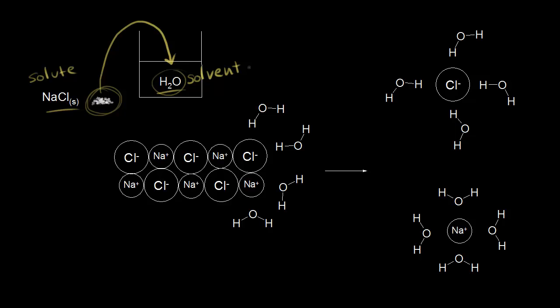If you look more closely at sodium chloride, solid sodium chloride is an ionic crystal, and so it's held together by ionic bonds. The sodium cation with a positive charge is attracted to the chloride anion with a negative charge, and that's what holds together our ionic crystal.